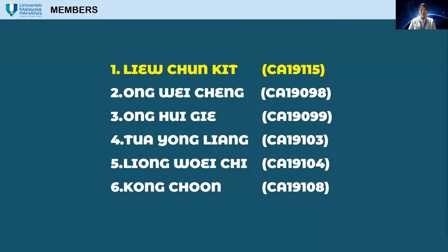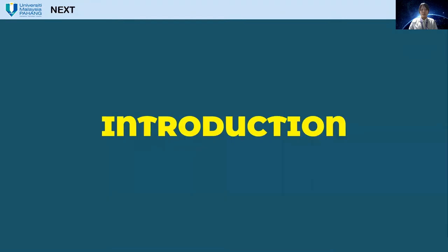In our team we have six members: Liu Chun-Ki as our team leader, Ong Wei Cheng, Ong Wei Ji, Tua Yong Liang, Leong Wei Ji — that's me — as well as Kong Jun. My name is Leong Wei Ji with the matrix number CA19104.